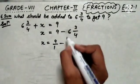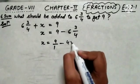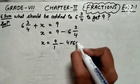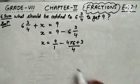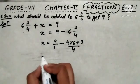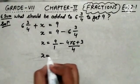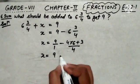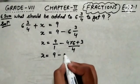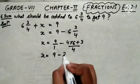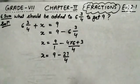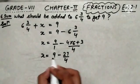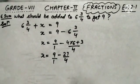How do we convert it? 4 multiplied by 6, then 3 will be added, divided by 4. So this step can be written as x equals 9 minus 24 plus 3, which is 27 upon 4. So we have 9 upon 1 minus 27 upon 4.